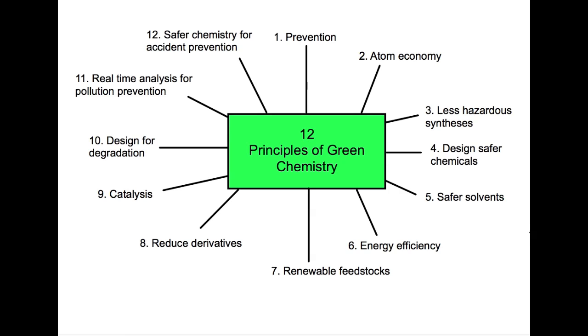And number twelve is safer chemistry for accident prevention. This is that it's safer for the chemist working on these reactions. Any substances and form of substances that you use should be chosen to prevent accidents, and that includes accidents such as explosions or fires.